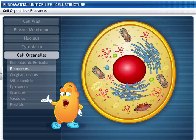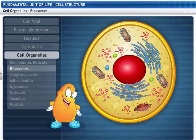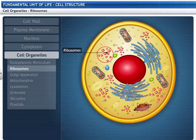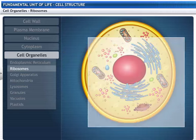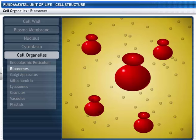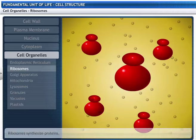Do you know what these small spherical granules are? These are ribosomes found scattered in the cytoplasm or attached to the outside of the endoplasmic reticulum. These are naked and have no membrane. Ribosomes synthesize proteins.